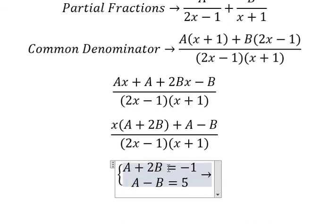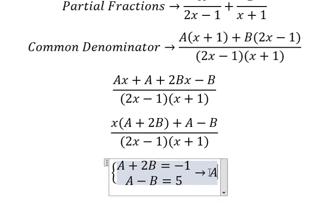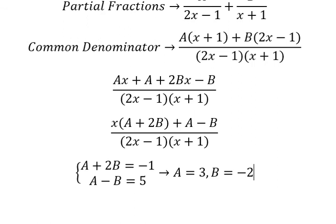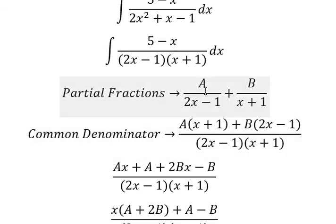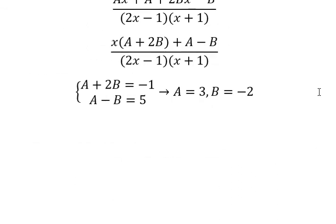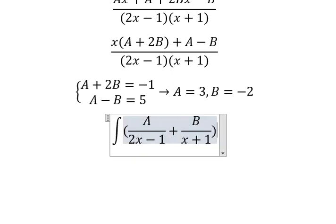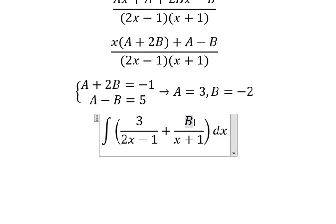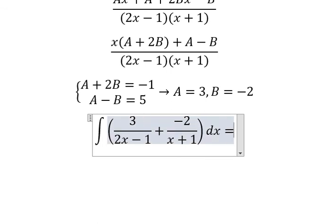And now we can find the solutions of A and B. So A equals to number 3, B equals to negative number 2. And now we have the final answer.